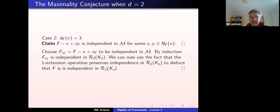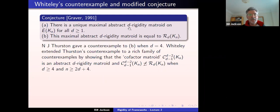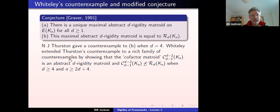This contains our strategy for showing there is a maximal abstract three-rigidity matroid, similar to Graver's but obviously more complicated. Let's go back to Graver's conjecture. The first counterexample is due to Jota Engir Thurston, who was a student at the time and constructed a specific matroid which is a counterexample to part B. Then Walter Whiteley extended Thurston's counterexample to give a rich and interesting family of counterexamples called the cofactor matroids. There is a cofactor matroid for each d, and it comes from approximation theory — from the theory of bivariate splines.